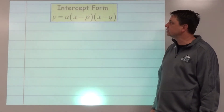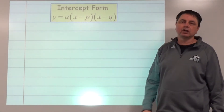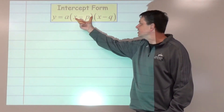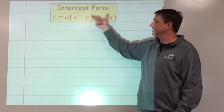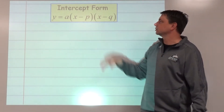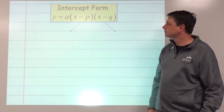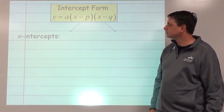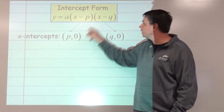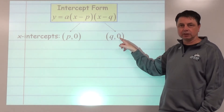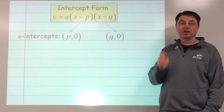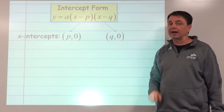On to the graphs. As I said, this is either known as intercept form or factored form. These factors are going to give us x-intercepts. The x-intercepts will be at (p, 0) and (q, 0) — those are going to be the first points that we use on our graph.